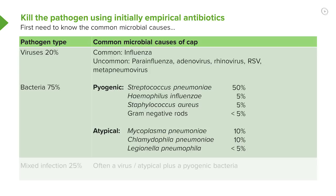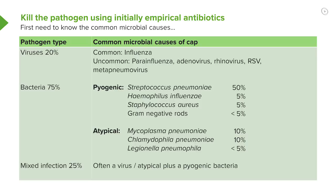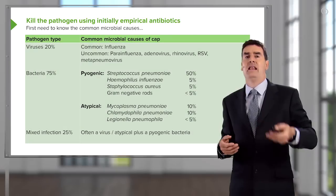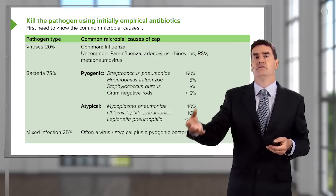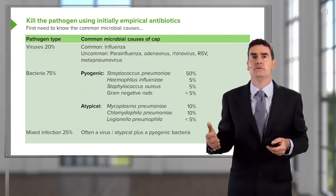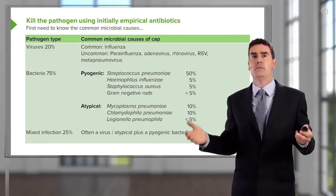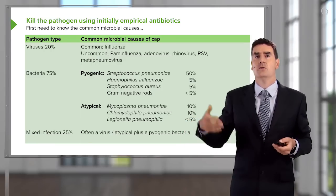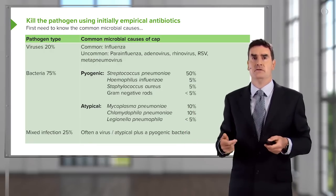An important point is that many patients have a mixed infection — a viral infection that allows bacteria in. So they have a combination of influenza A and pneumococcal pneumonia, for example. The same thing happens with mycoplasma and chlamydophilia, allowing bacteria such as Haemophilus, Staphylococcus aureus, or Streptococcus pneumoniae in to cause infection.